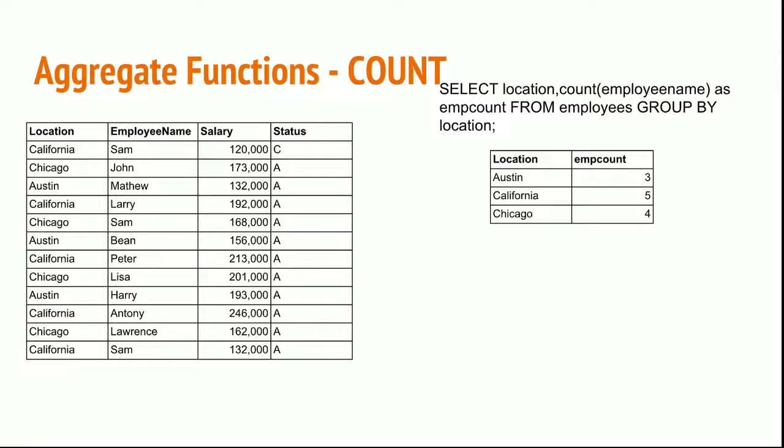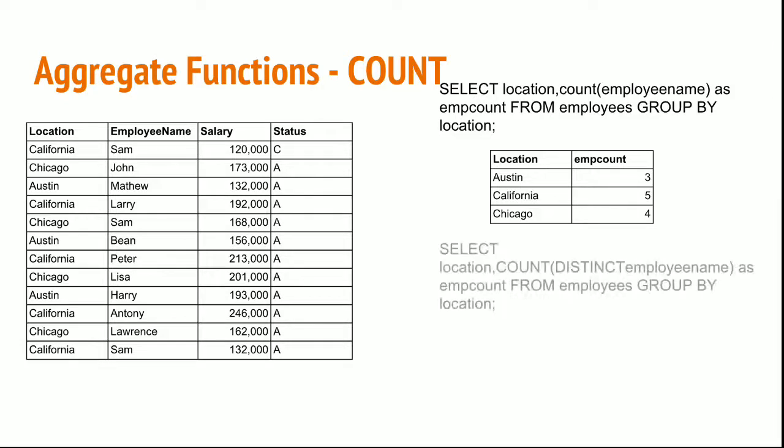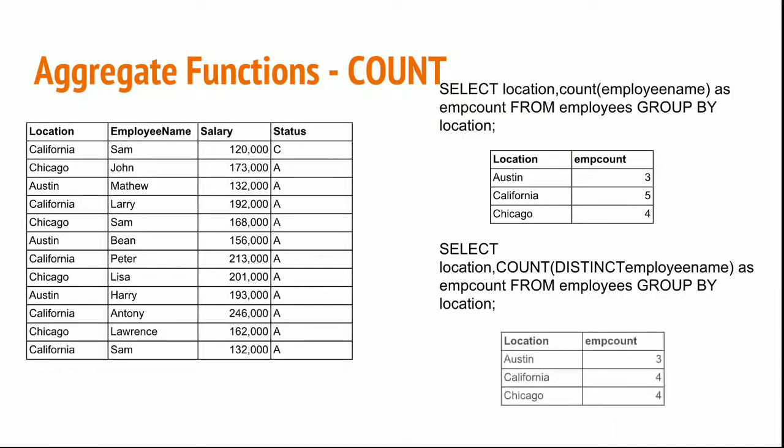To eliminate that, we can use WHERE status = 'A' to consider only active records. Another way to consider only distinct employees within each location is: SELECT location, COUNT(DISTINCT employee_name) AS employee_count FROM employees GROUP BY location. This results in a table where you don't have five employees in California — you have only four.